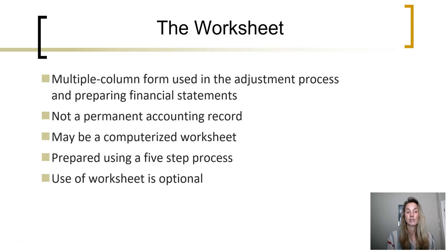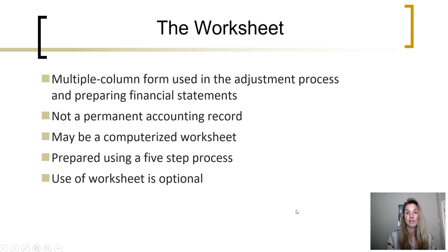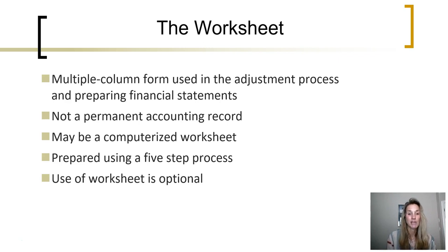The worksheet is really just a multi-column form — think of it as an Excel spreadsheet. It is used in the adjustment process when preparing financial statements. It is not a permanent accounting record, just a worksheet used by the accounting department. It can be computerized or done by hand, though today most people do it computerized through software. It is prepared through a five-step process, and again, this is optional — a company does not need to use a worksheet when doing the adjusting process and preparing end-of-period financial statements.